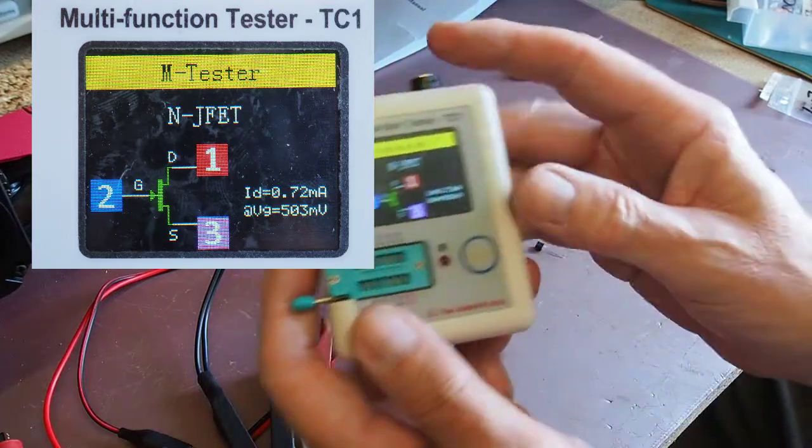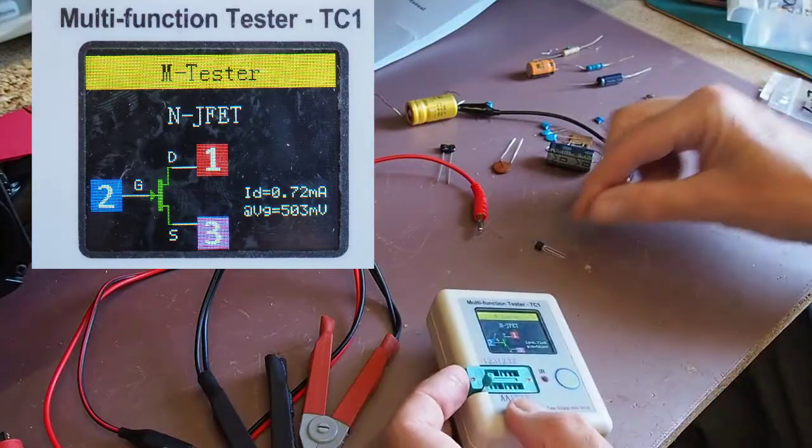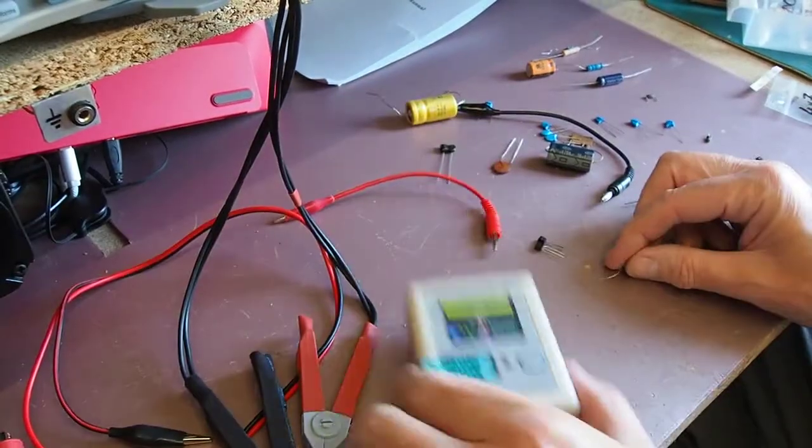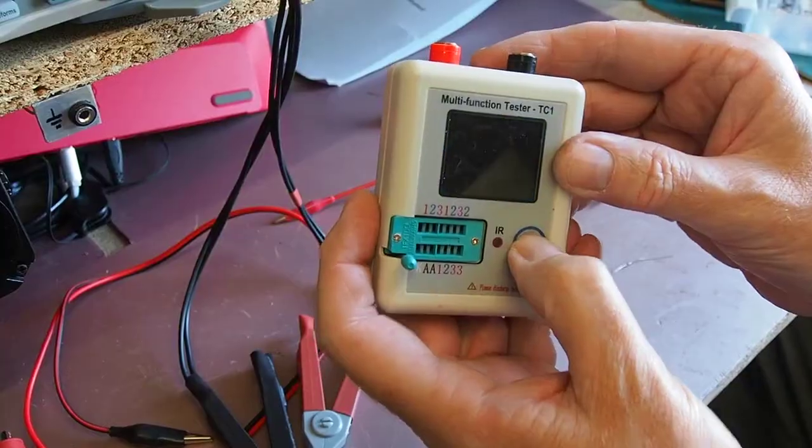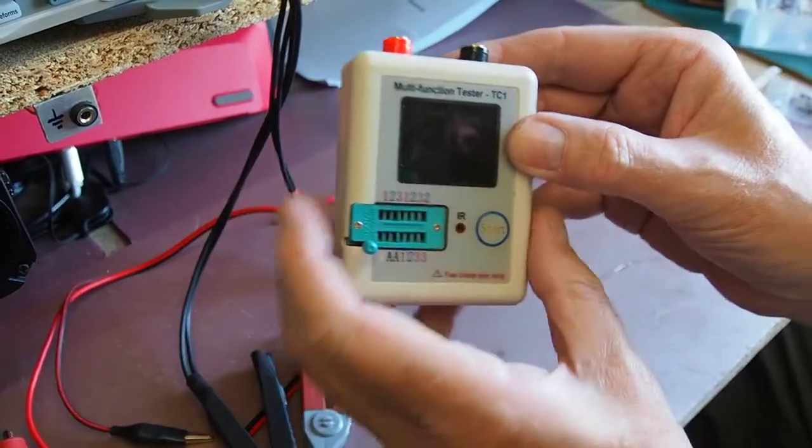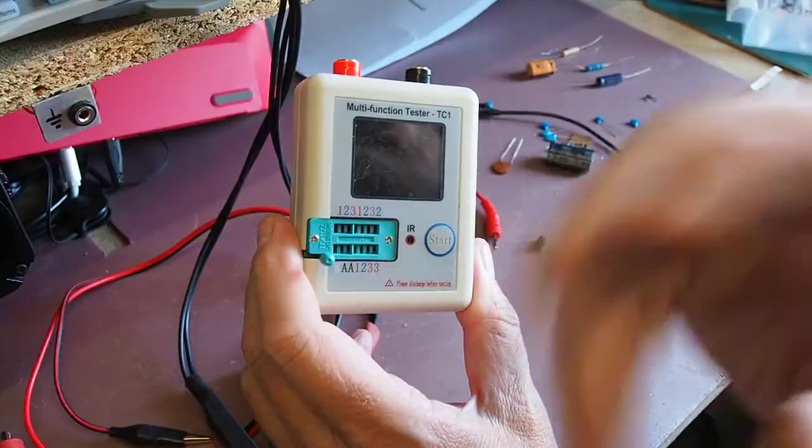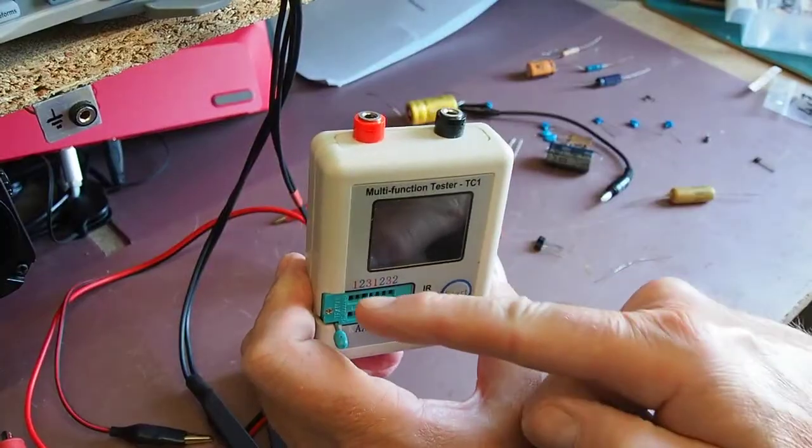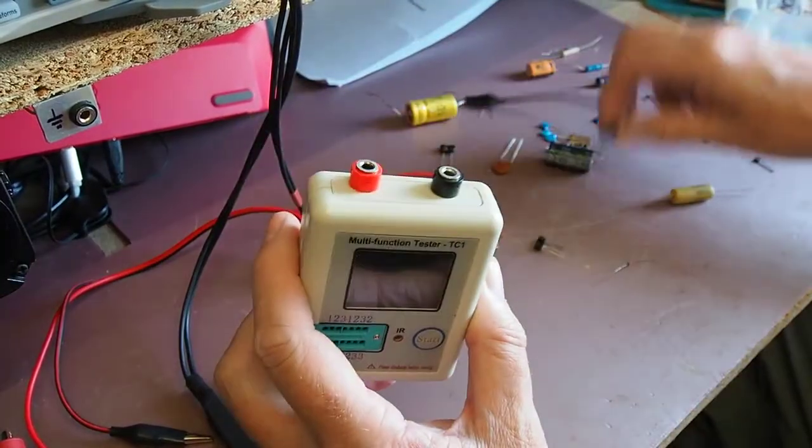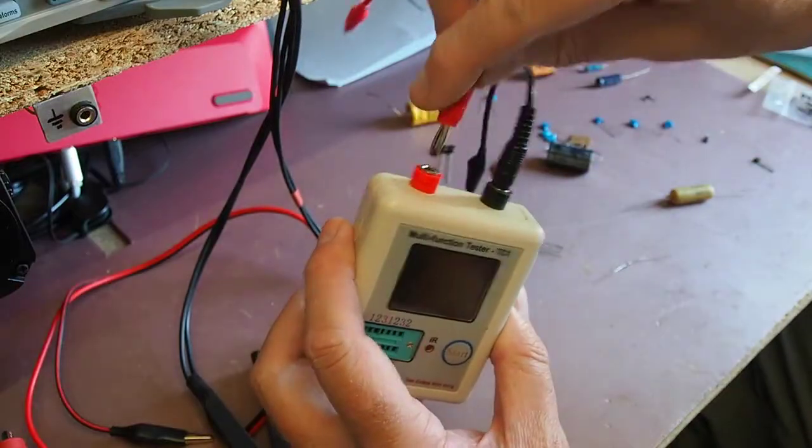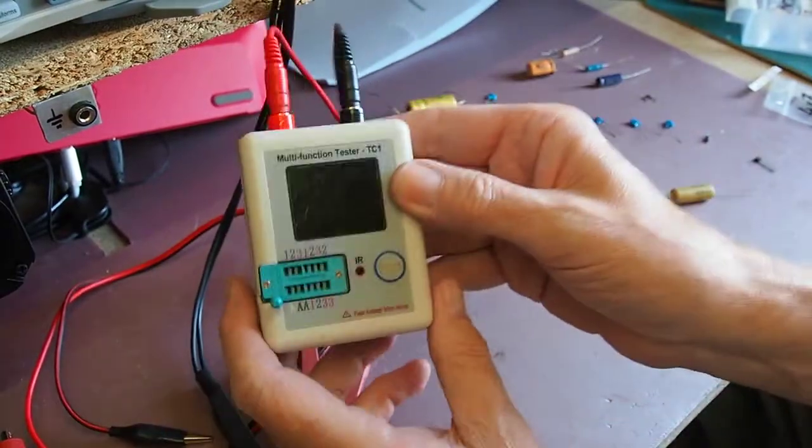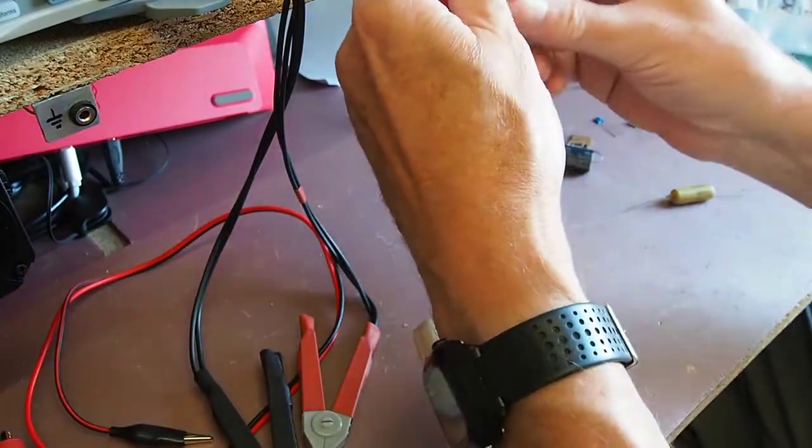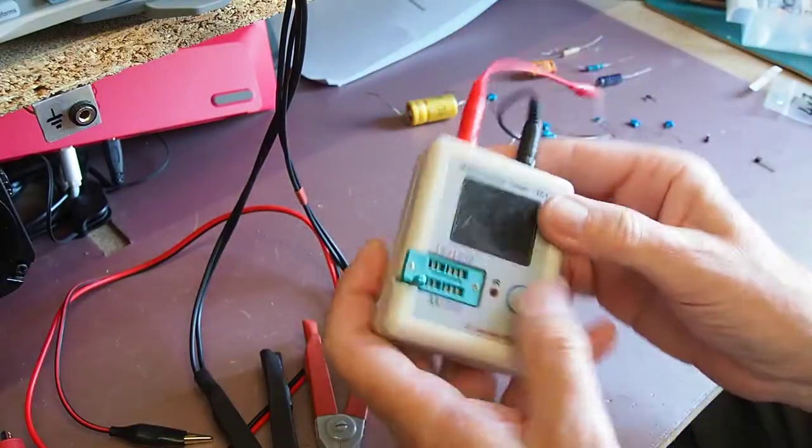Now it obviously does okay with diodes so I thought let's give it a bit of a challenge. Now a long time back the leads that came with it were those little short leads with the clips on and they were quite flimsy, so I attached two banana sockets to lines one and three so if I want to just test components with two legs I can just use any standard banana plug leads which I find quite helpful.